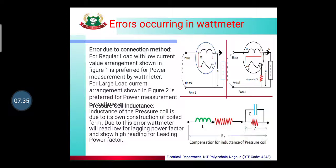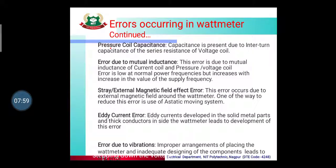The third error is pressure coil capacitance, which is present due to inter-turn capacitance of the series resistance of the voltage coil. The fourth error is error due to mutual inductance between the current coil and the pressure coil. This error occurs at normal power frequency, but as the supply frequency increases, this error also increases.